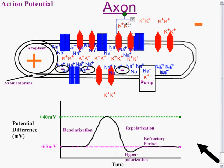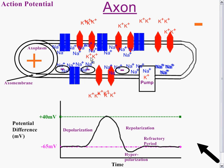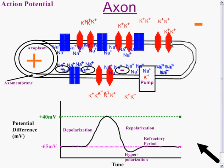Hyperpolarization refers to this little dip. Now our potassium has to all diffuse through — it's moving through the potassium channels — and at the bottom of this downswing, the potassium channels then again close.